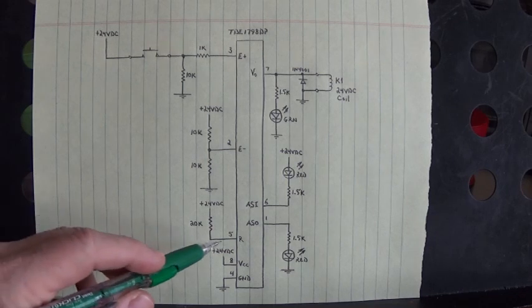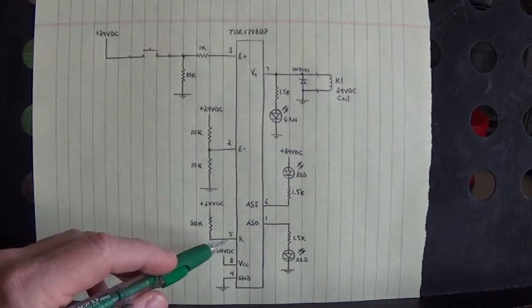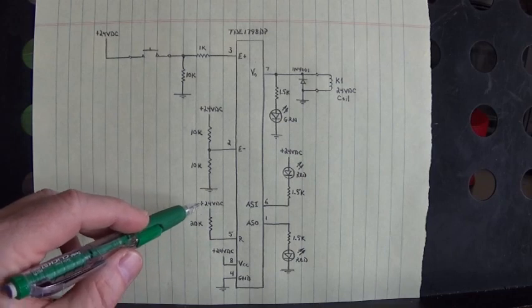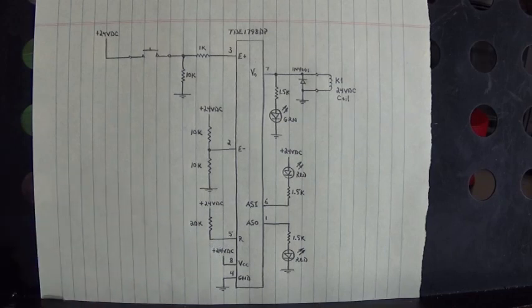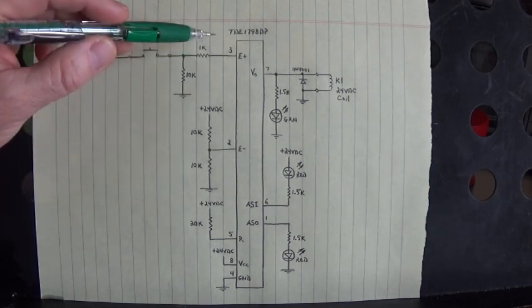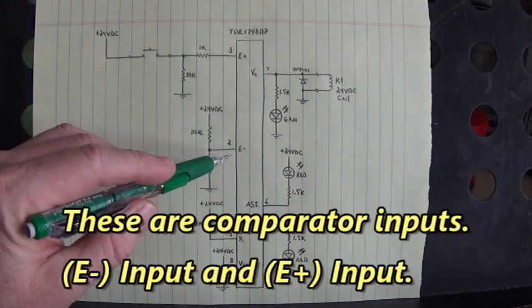Here's our reset on pin 5. I'll tie that up to plus 24 volts DC with a 20k ohm resistor. Here are the inputs on pin 2.